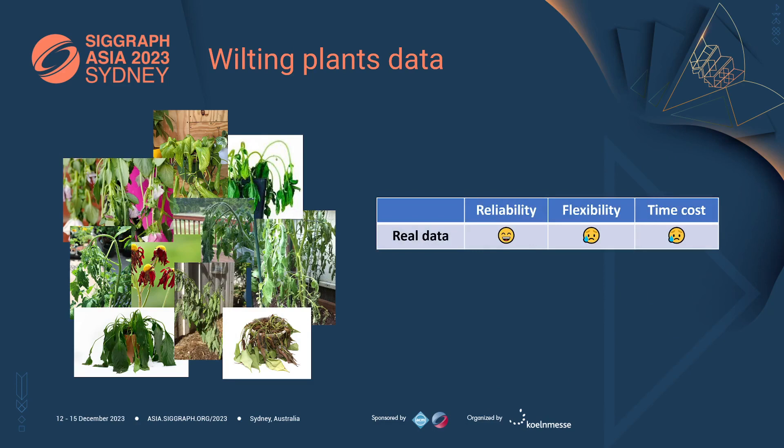Of course we can record real wilting processes. This approach obviously produces reliable data that matches reality and can be used as absolute ground truth. However, it also requires waiting for the plant to wilt, which makes it terribly slow. Moreover, once the plant has wilted, we cannot obtain additional data, like another point of view or extra monitored parameters.